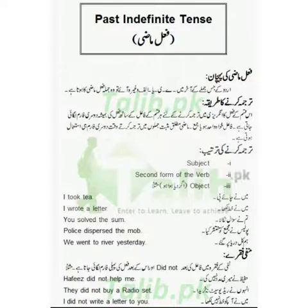جیسا کہ 'اس نے خط لکھا' — یہاں الف آیا، 'لڑکی نے کپڑے دھوئے' — یہاں بڑی یہ آئی. تو اس طرح کے تمام جملے جن کے آخر میں الف یا چھوٹی یہ یا بڑی یہ آتا ہو، اس کو ہم پہچان کر لیتے ہیں.